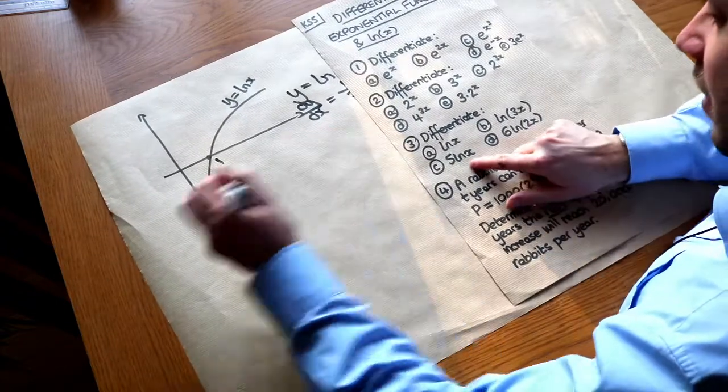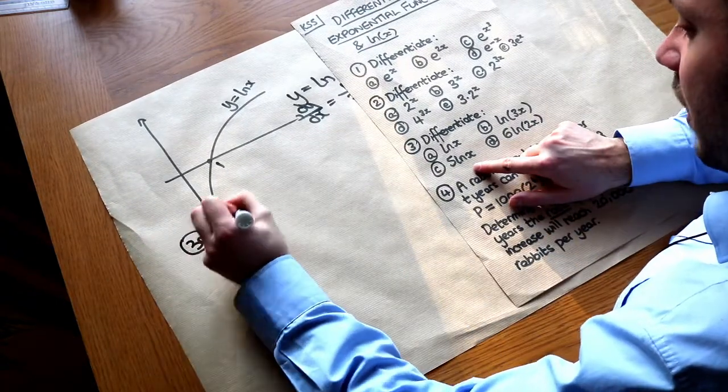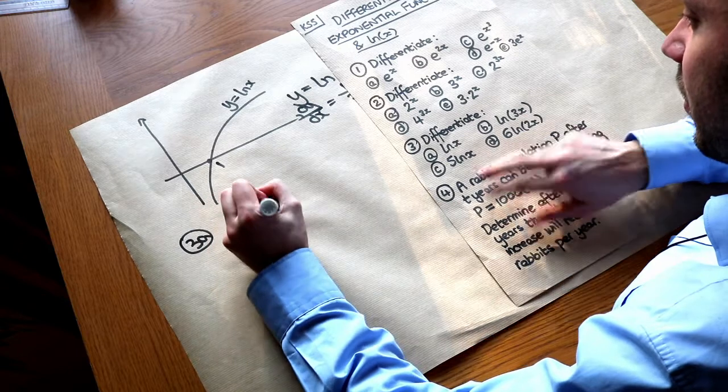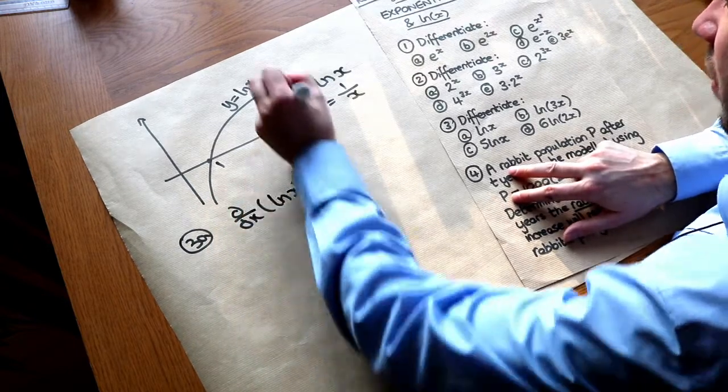So let's differentiate these things here. 3a. Well we've already seen that when you differentiate ln of x you get 1 over x as a key result.